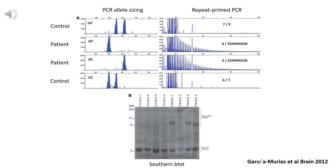Diagnosis of expanded repeats currently requires expensive and low throughput assays, specifically developed to interrogate a single expansion. Technologies which include PCR allele sizing, repeat-prime PCR, and southern blot — illustrated here — have been utilised for decades. Generally speaking, these assays are specific for a single gene, complicated and laborious. Notably, they are not amenable to high throughput analyses preferred within diagnostic labs, and therefore only a minority of the most common repeat expansions are actually tested in diagnostic centres.